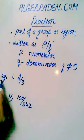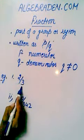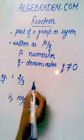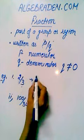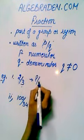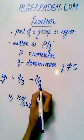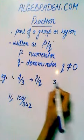For example, 2 divided by 3 is a fraction because it is written in the form of P over Q and Q is not equal to 0.